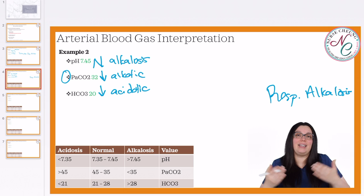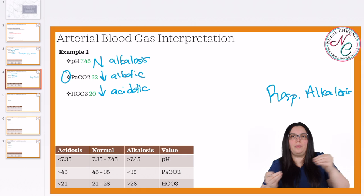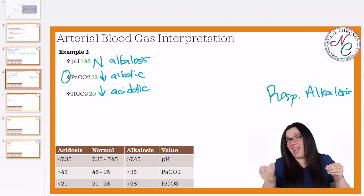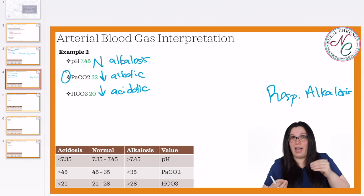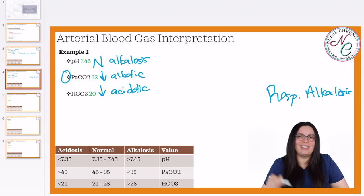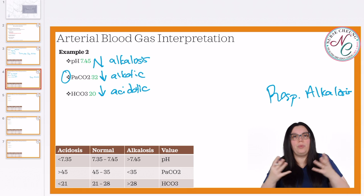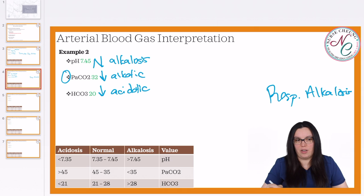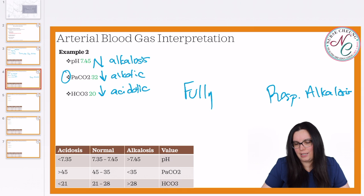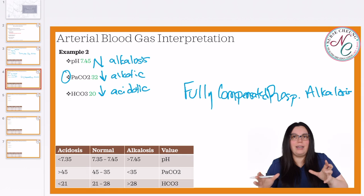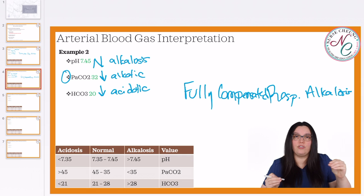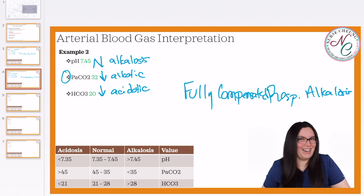Now we need to determine if it is compensated. It is, because we've got two competing systems — our respiratory system and our bicarb HCO3 system are out of whack, trying to fix each other. So we know we've got some kind of compensation taking place. Next, we need to take a look at our pH. Our pH is neutral. When we know we have a neutral pH, regardless of what end of the spectrum it's falling on, we know that this particular blood gas is fully compensated. They have worked hard enough to get that body's pH back to normal. They're still competing, still trying to fix each other, but our pH is now back to normal. So we have a fully compensated respiratory alkalosis.